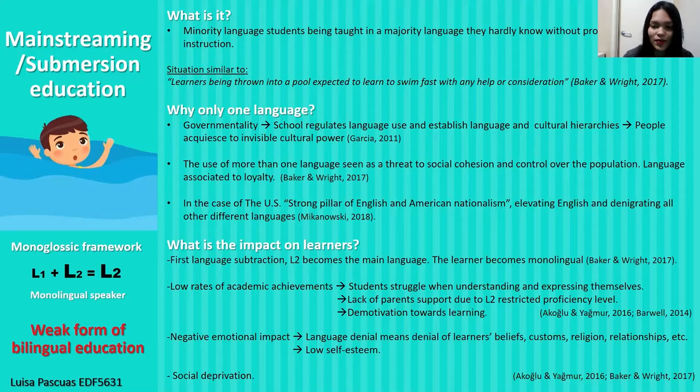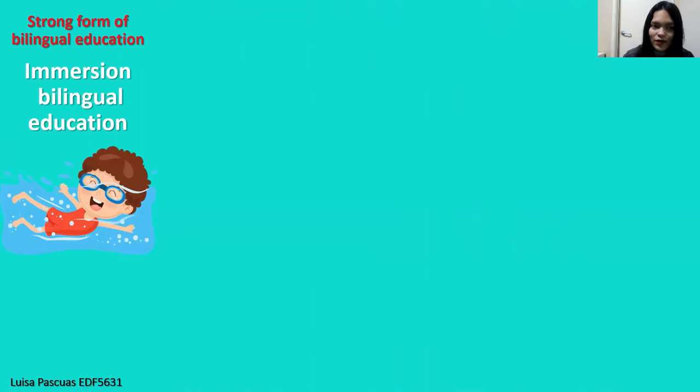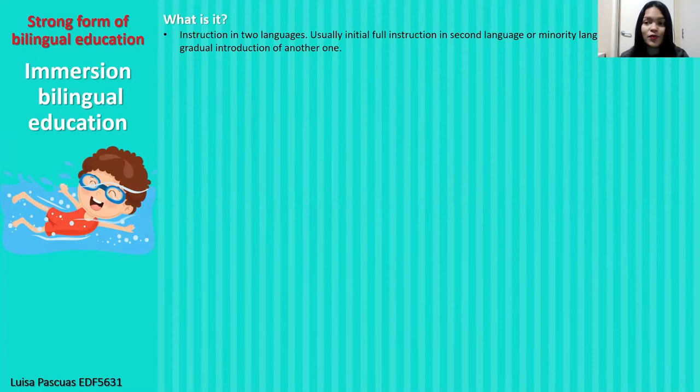The second one is immersion bilingual education. This is a strong form of bilingual education. In this one, instruction is given in two languages. Usually, initial full instruction in the second language or minority language, and then the introduction of the other one.